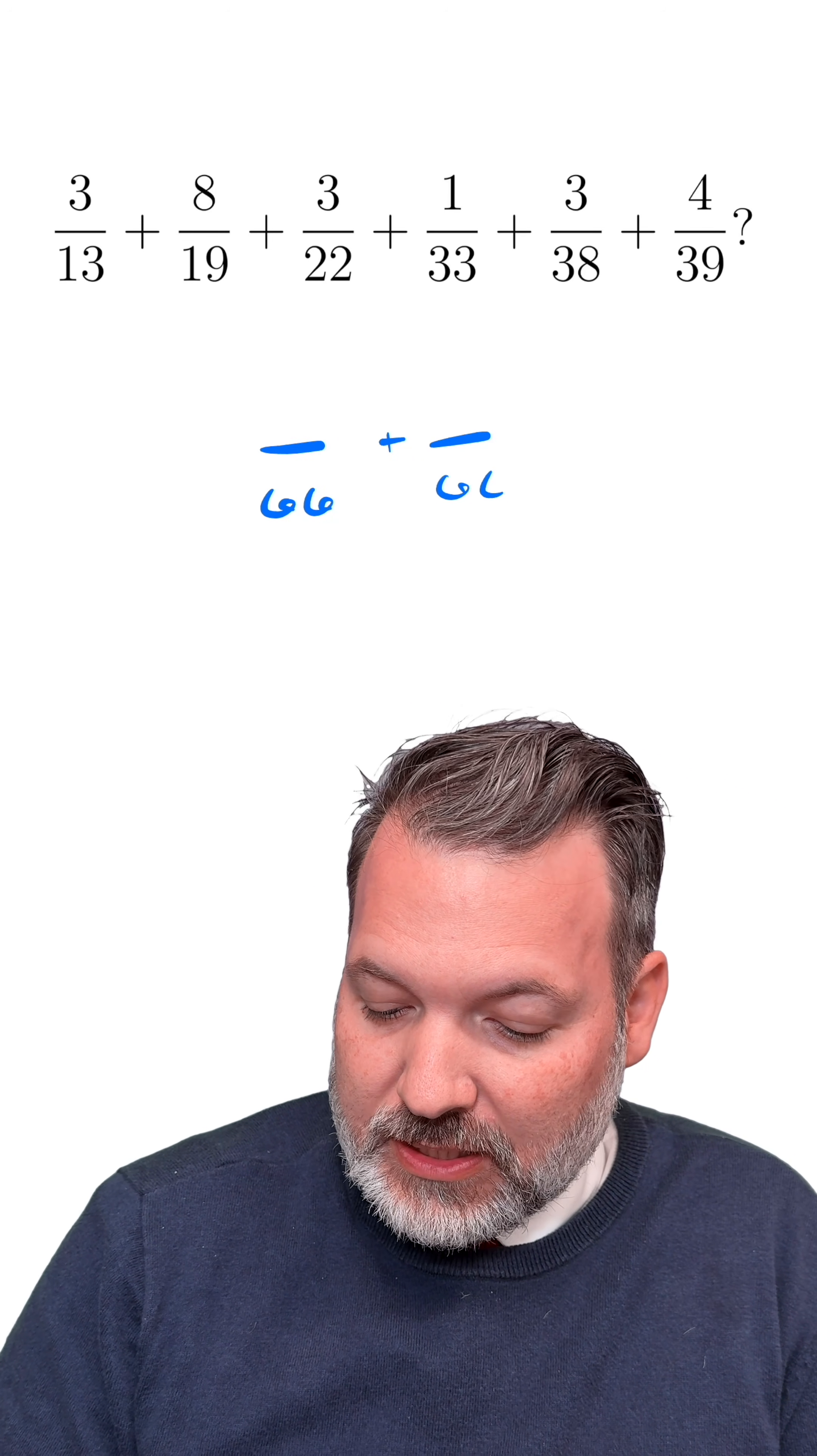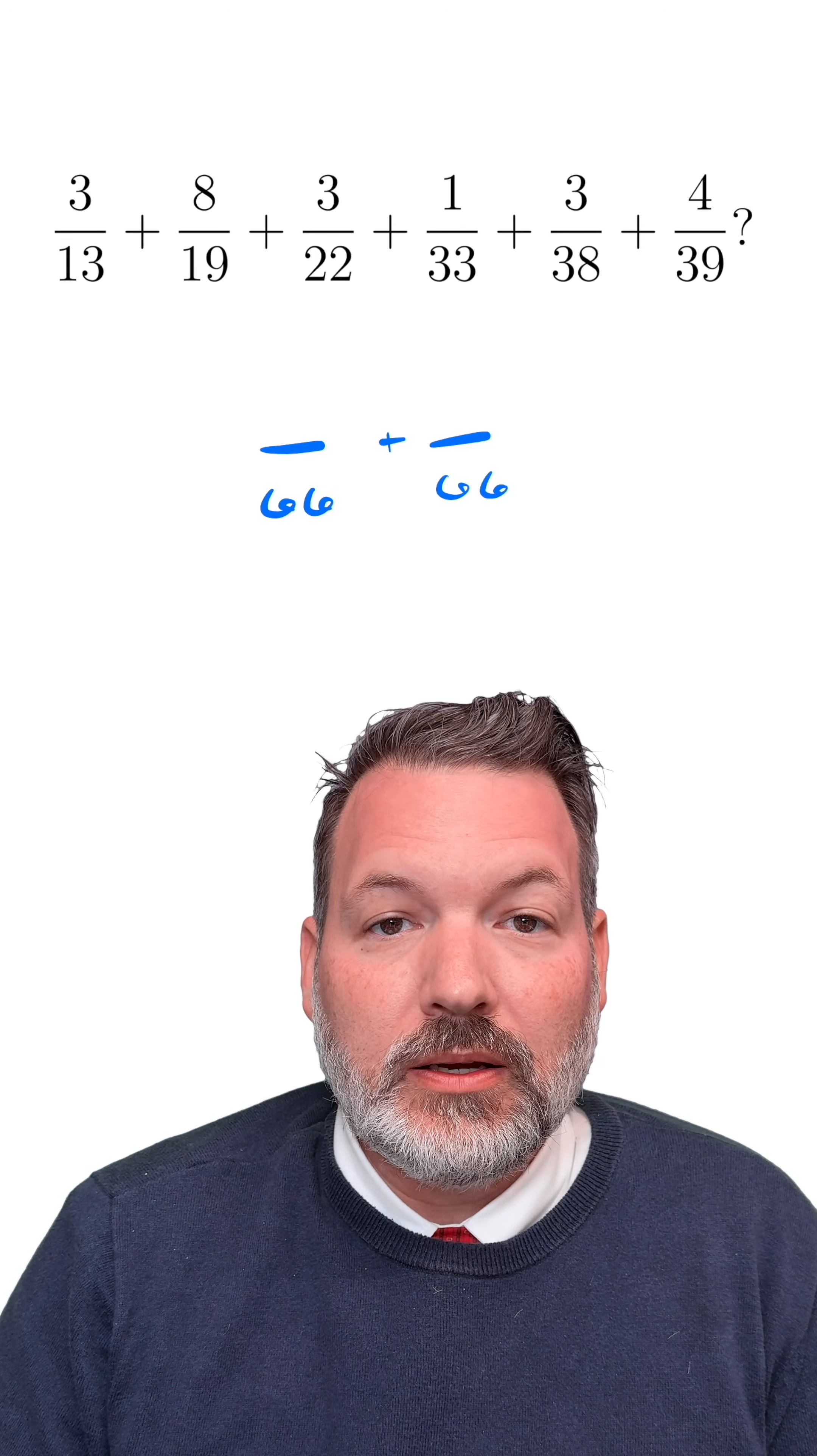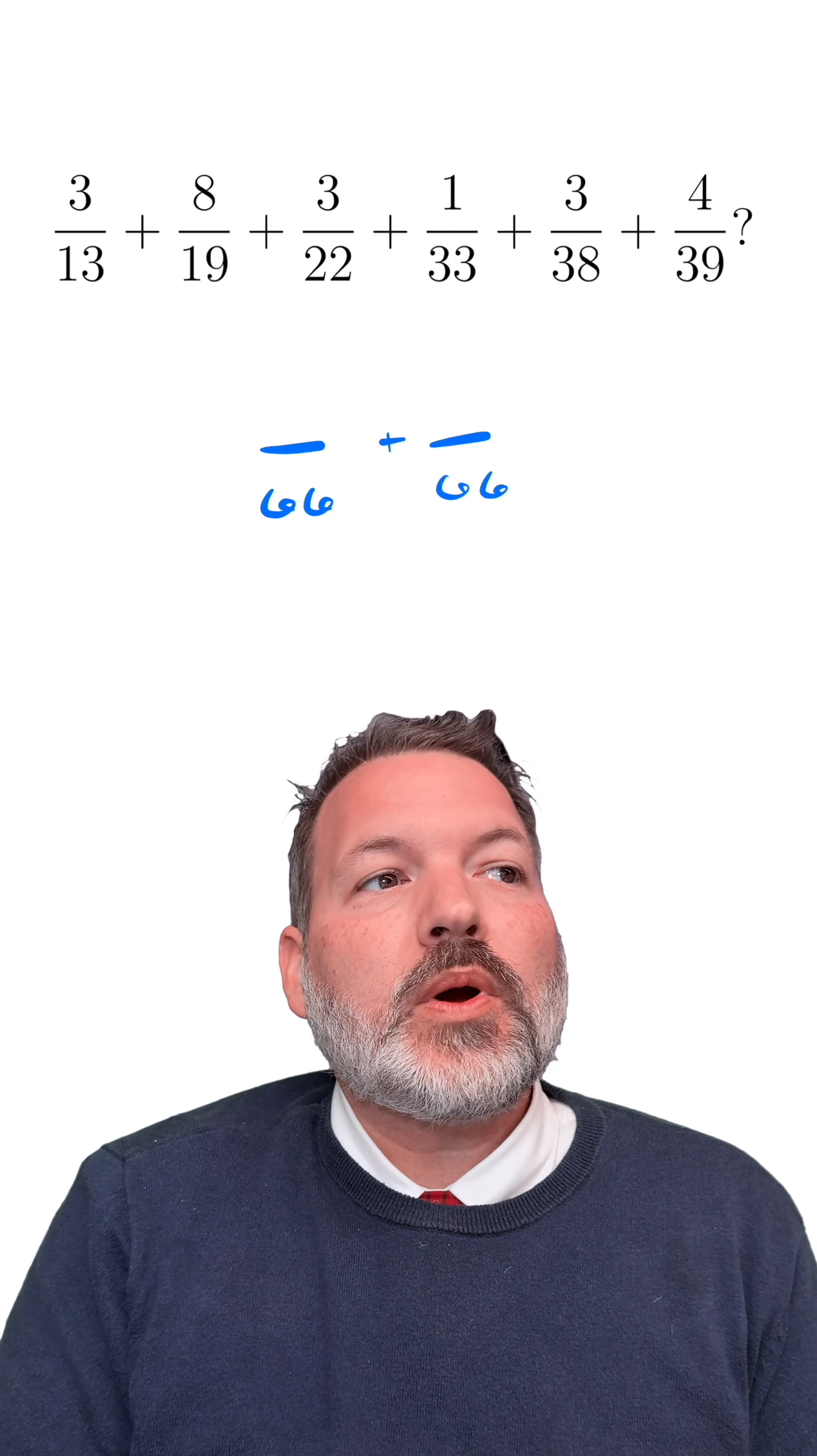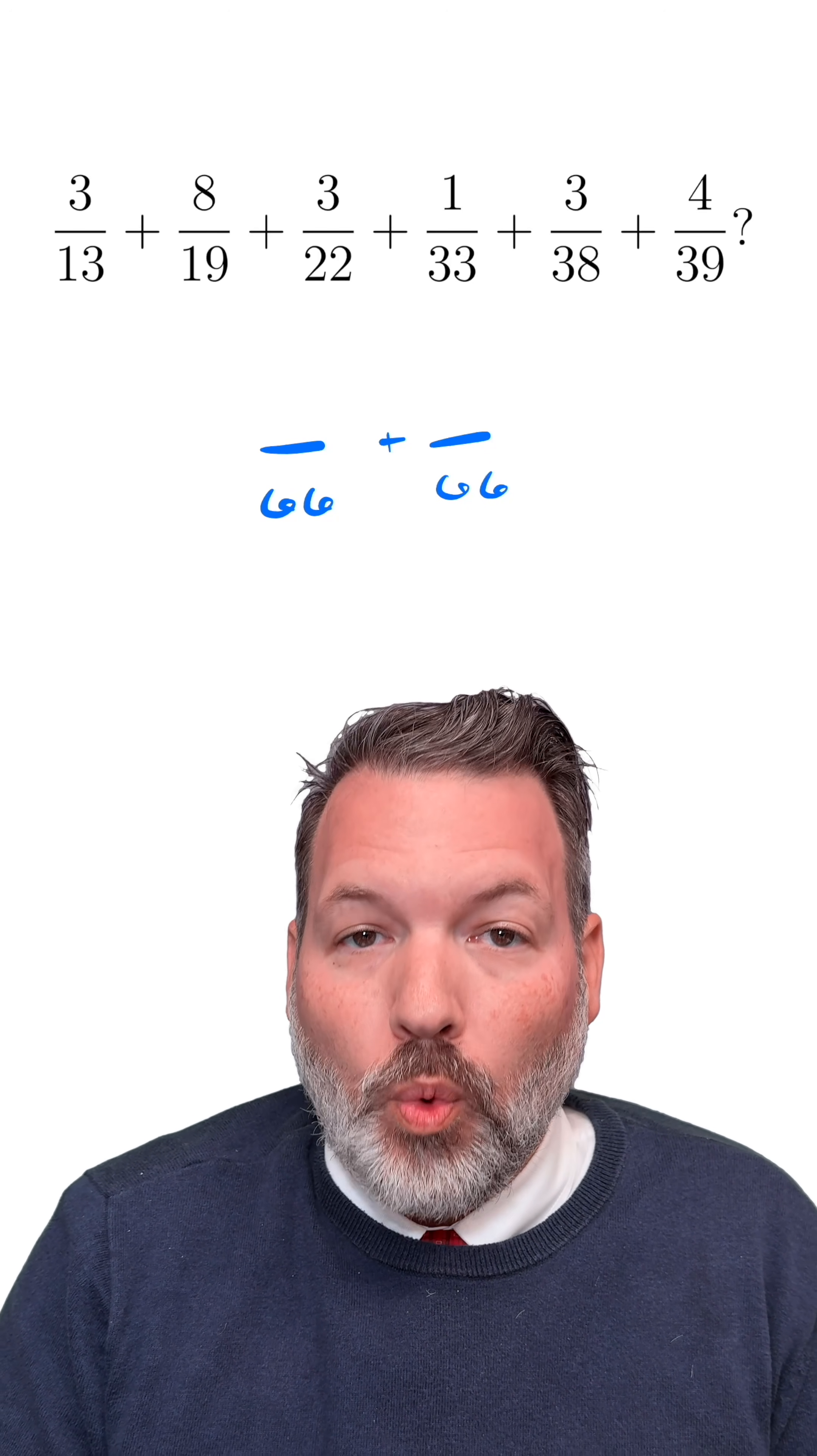For example, although 22 and 33 are not the nicest numbers, they do have a relatively easy common denominator in 66. So now I just need to figure out how to express something over 22 as something over 66 instead, and something over 33 as something over 66 instead. This is where we want to start manipulating our fractions by multiplying by a form of one.